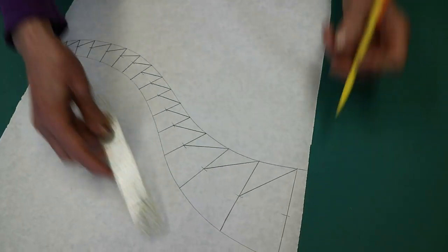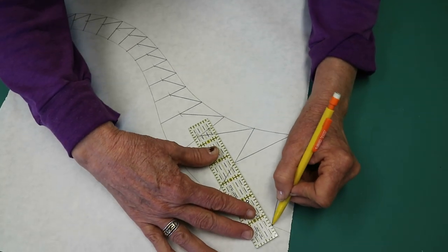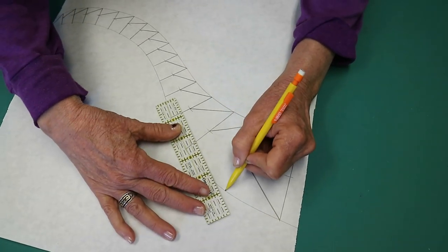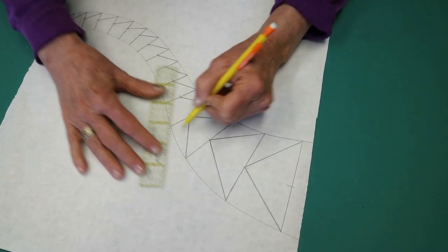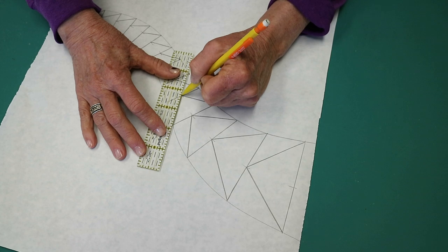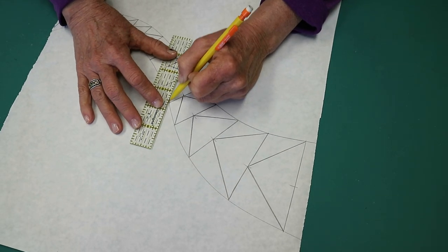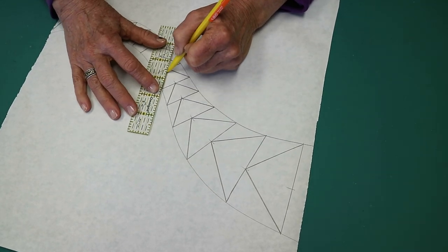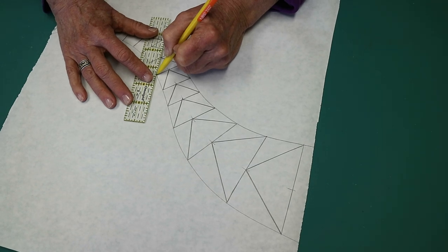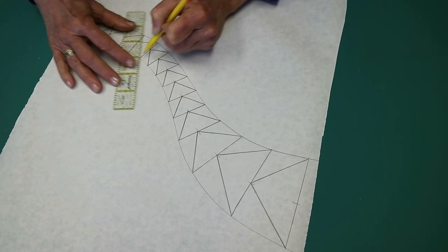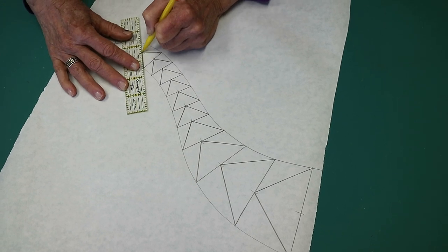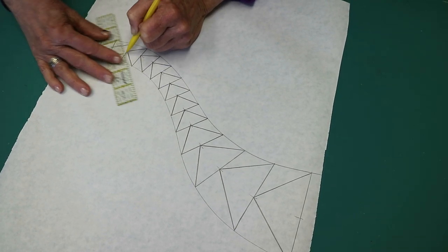Then we're going to come back in and fill in the other side like this. Notice that I always plant my pencil first, and then I slide the ruler up to it and pivot around the pencil. I also tend to draw really dark lines because I know that I have to trace everything, because this is my master and I never cut my master up.